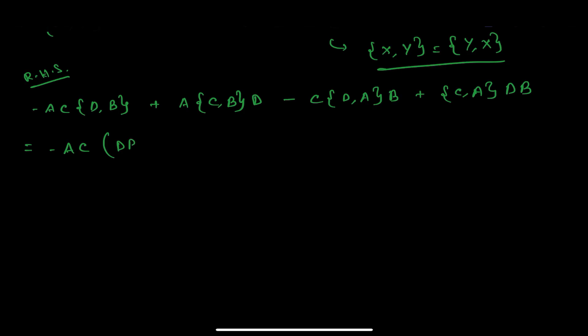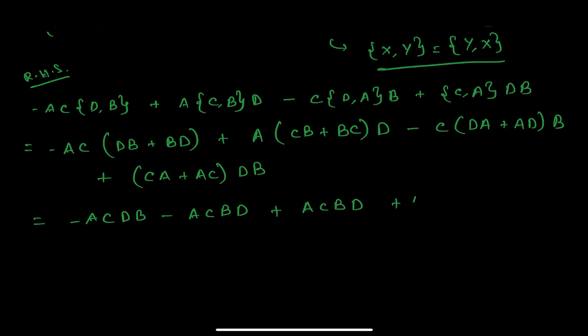So we have -AC(DB + BD) + A(CB + BC)D - C(DA + AD)B + (CA + AC)DB. Further expanding, we get -ACDB - ACBD + ACBD + ABCD